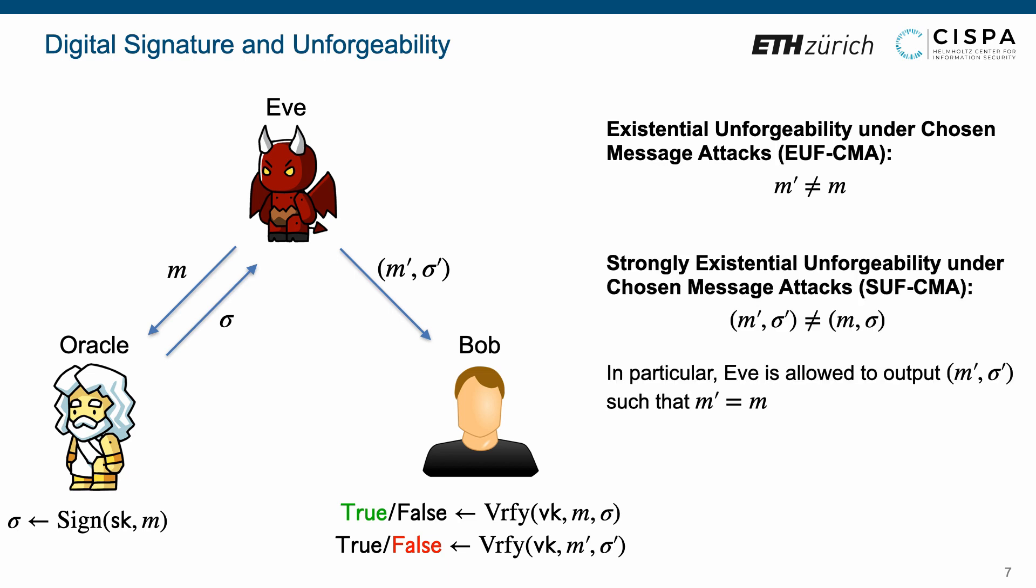The strong unforgeability requires Bob to reject any forged message signature pair, which is unequal to any pair derived from the interaction between Eve and the signing oracle.